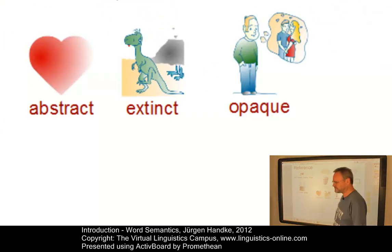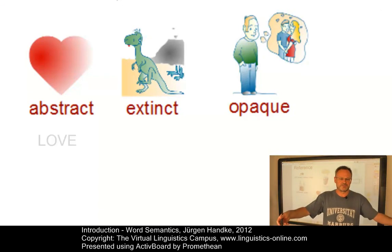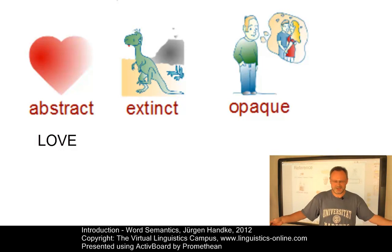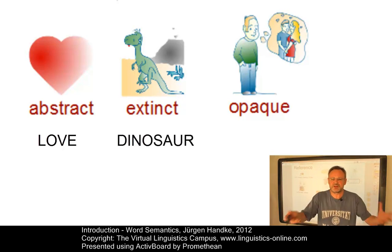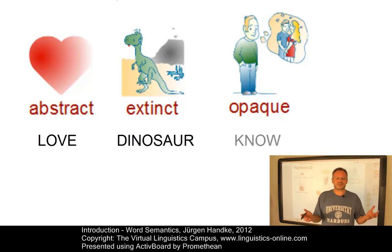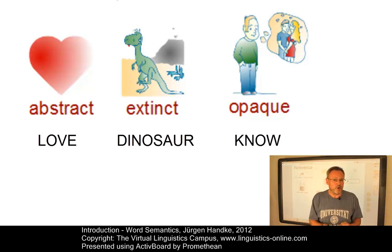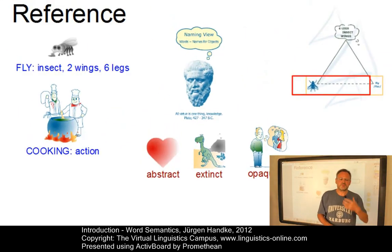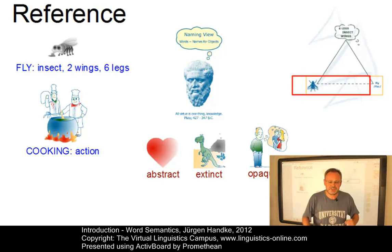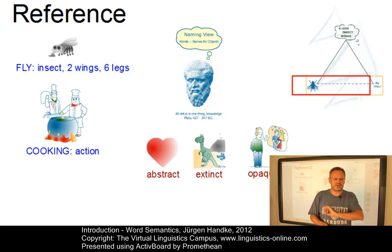Let's look at some of those problems. For example, abstract objects — what is love? Love is an abstract object. Or look at extinct objects: how can you establish a relationship with something that doesn't exist anymore, like dinosaurs? And then we have opaque contexts — 'John knows that Bill wants to kiss Mary' — how can we define the meaning of 'know'? Well, we certainly need a more sophisticated view that relates words and objects via a mediator, and this mediator is referred to as concept. So we have to expand the unidimensional naming view by a third dimension.